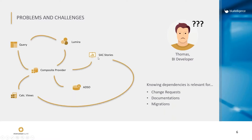Information on cross-system dependencies of these objects is not accessible so easily. Objects from different systems can have relationships to each other — for example, an SAC story consuming a calculation view in the HANA system, or a Lumira report consuming a query or composite provider in the BW world. This dependency information is relevant for Thomas in his day-to-day work, for example when implementing change requests. He might want to know the full impact when changing objects — which dependent objects might be inconsistent after a change?